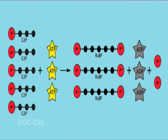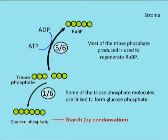5 G3P molecules produce 3 RuBP molecules using up 3 molecules of ATP. Since each CO2 molecule produces 2 G3P molecules, 3 CO2 molecules produce 6 G3P molecules, of which 5 are used to regenerate RuBP, leaving a net gain of 1 G3P molecule per 3 carbon dioxide molecules, as would be expected from the number of carbon atoms involved. This step requires 1 ATP.